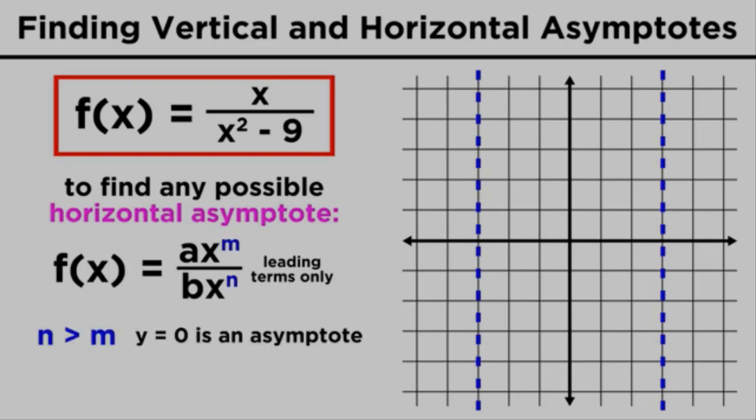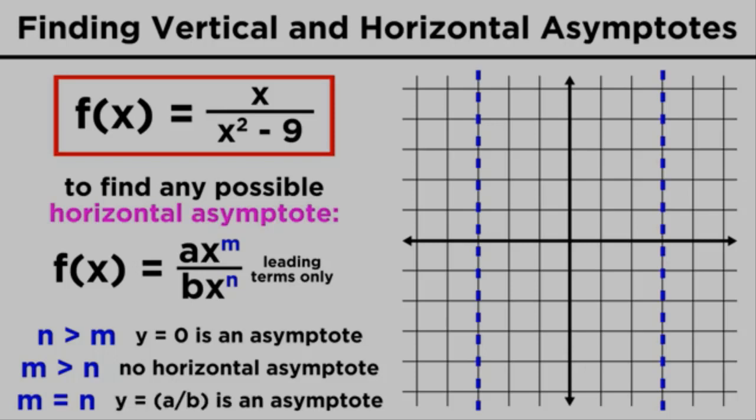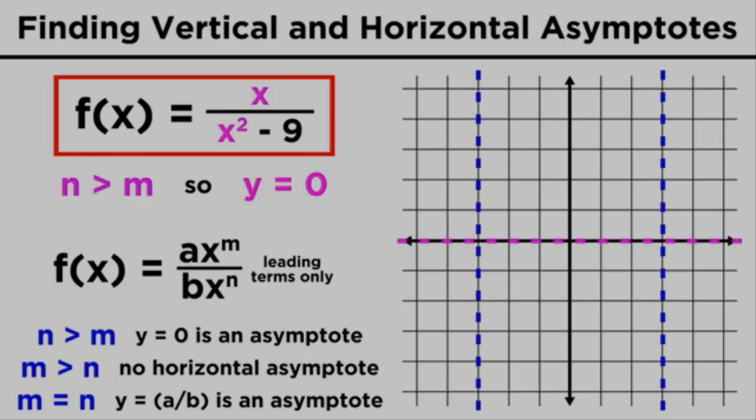If the denominator is a higher degree polynomial than the numerator, y equals zero will be an asymptote. If the numerator is a higher degree polynomial than the denominator, there will be no horizontal asymptote. If the two polynomials are of the same degree, then we take the leading coefficient of the top over the leading coefficient of the bottom, and y equals that number will be the horizontal asymptote. In this case, the denominator is of a higher degree as it is a quadratic, so y equals zero is the asymptote.